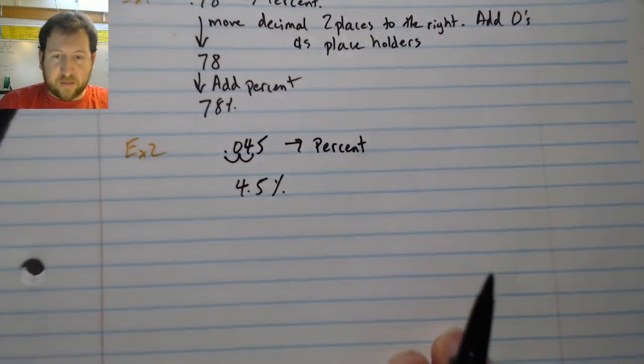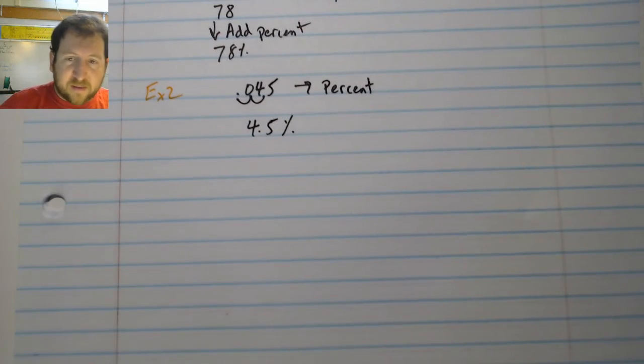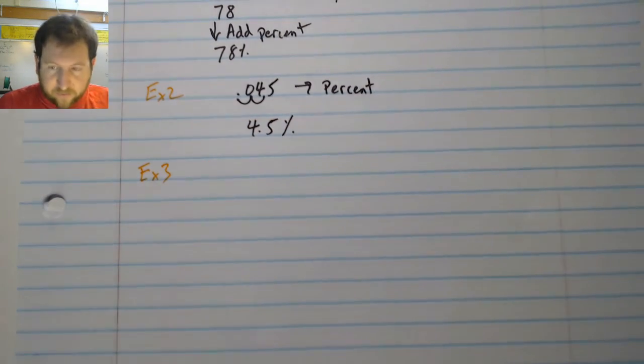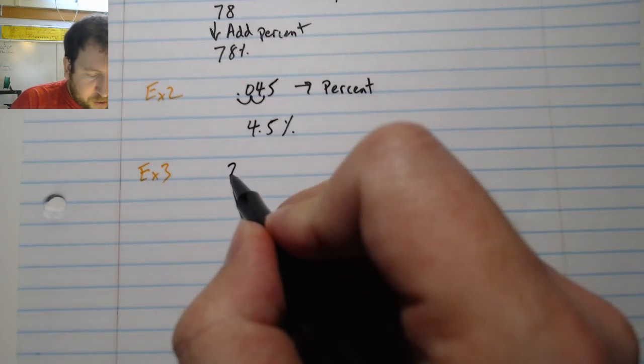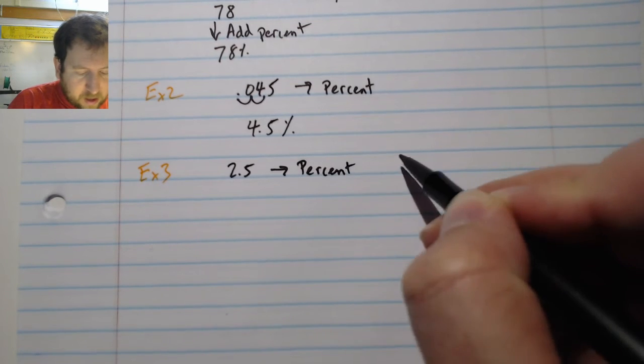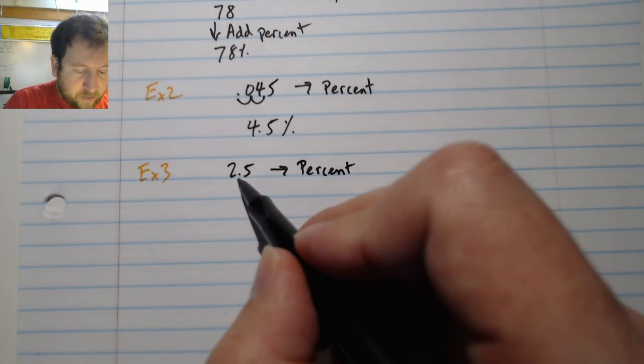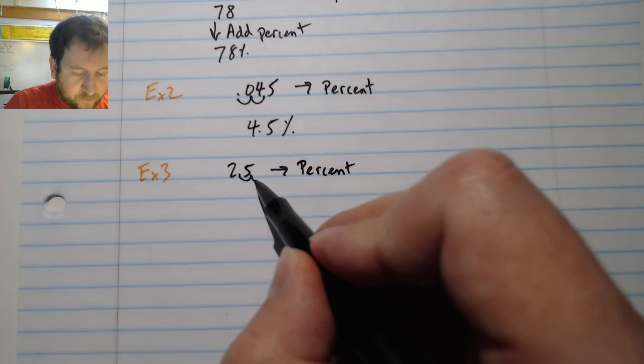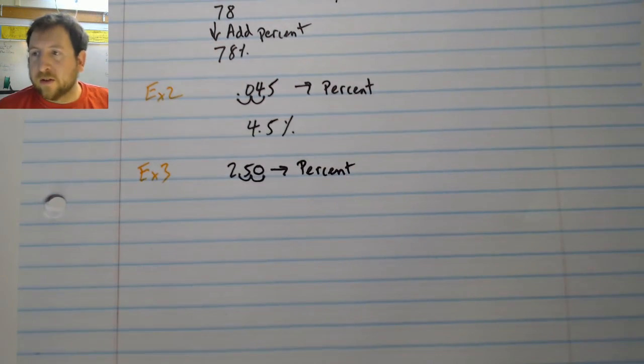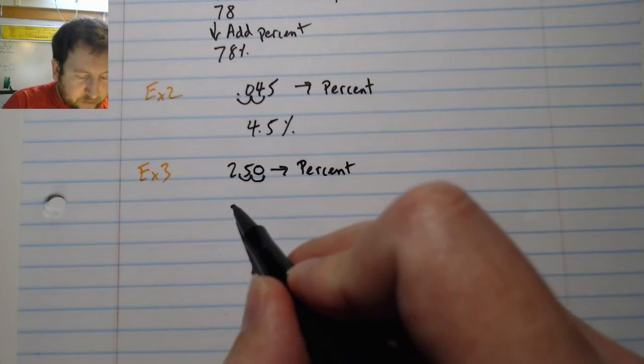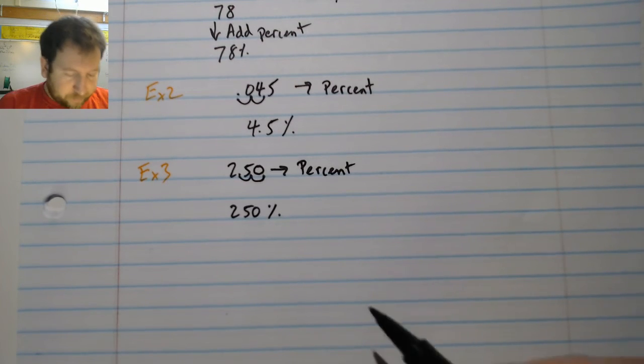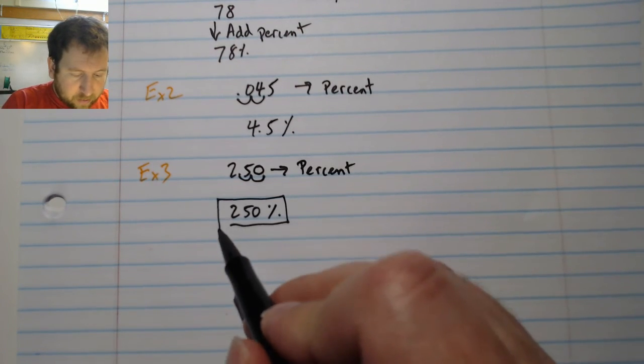Take a look at another quick example. This one shows that sometimes we will have percents that are over 100, as you've seen before. This time I can write 2.5 to a percent. And here I would do exactly the same thing. I would take my decimal point, one, two. Now, notice here there's no number here, there's no decimal, so I can add in a zero. So I get 250. All I'm going to do is add my percent.